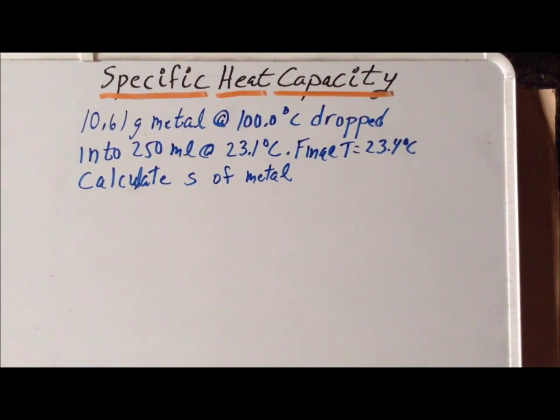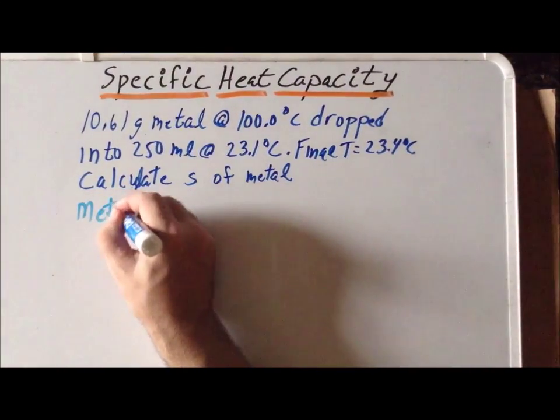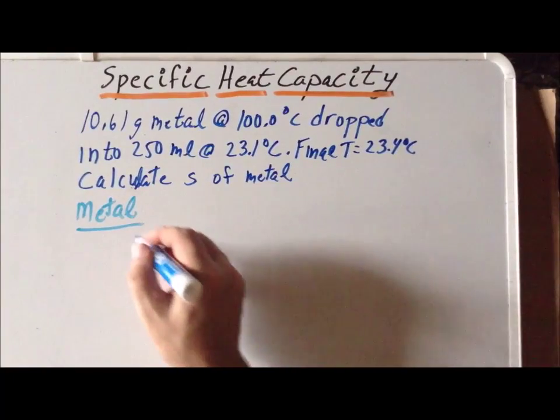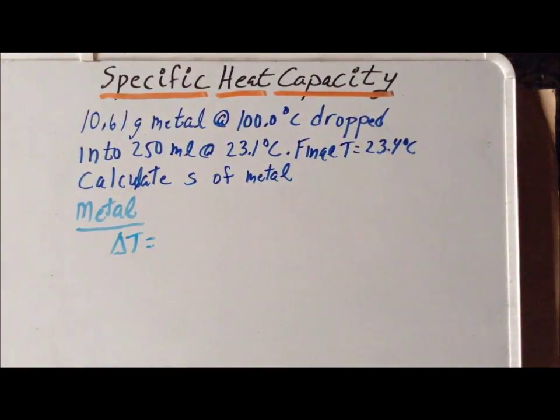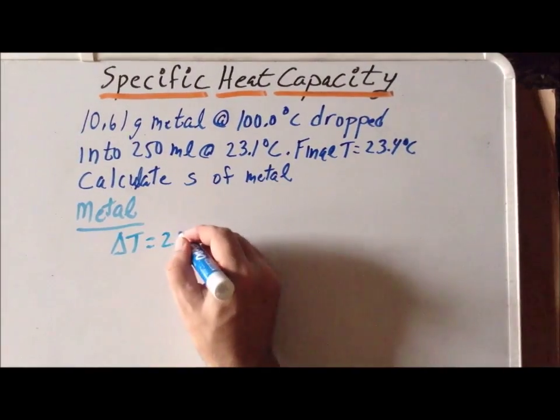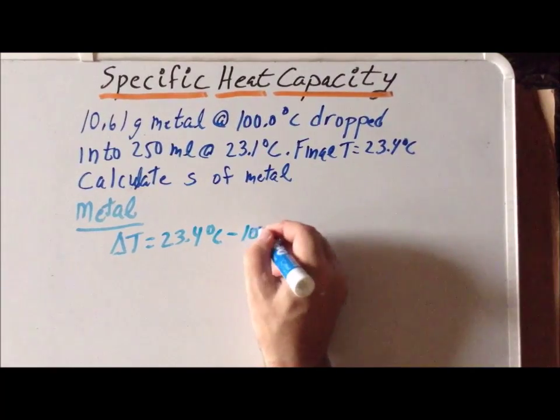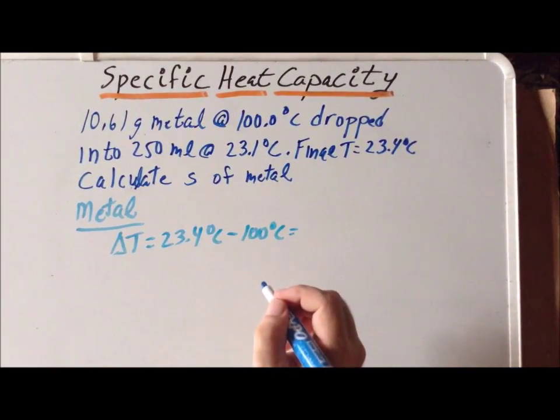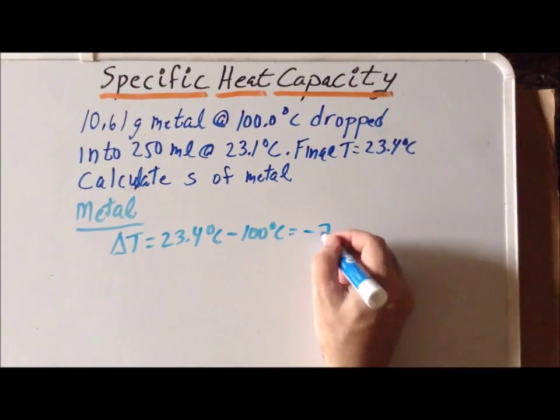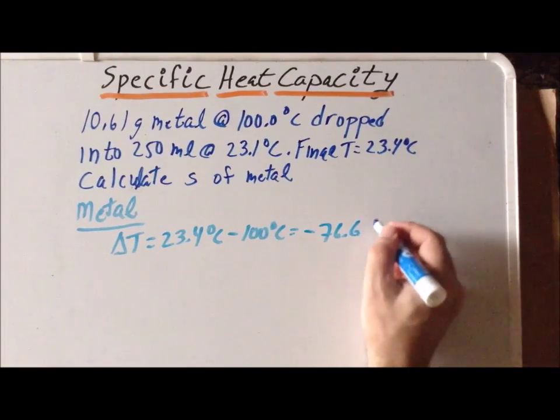Next, we want to look at the heat flows relative to the metal. So the change in temperature of the metal is the final temperature minus the initial temperature. We have 23.4 degrees centigrade minus 100 degrees centigrade. And we get a value of minus 76.6 degrees centigrade.